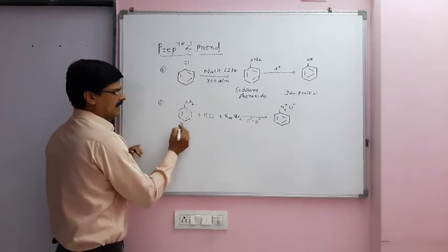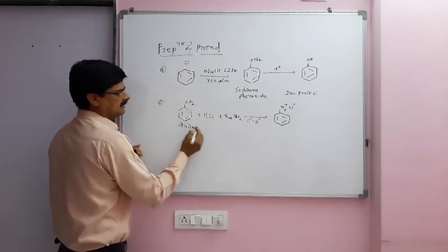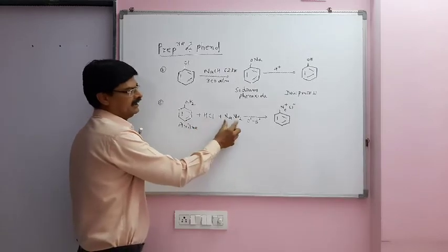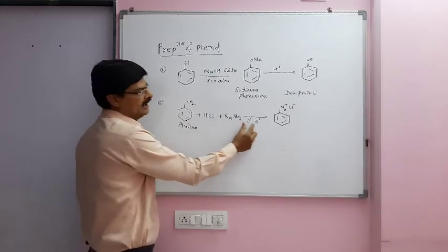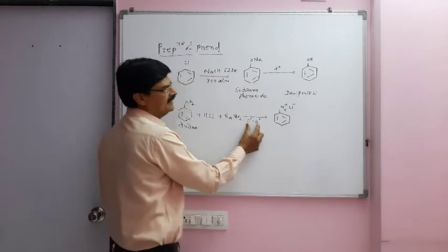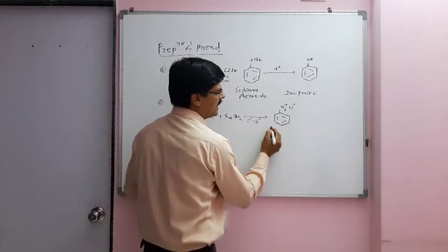So once more: aniline dissolved in acid, reacted with NaNO2 at 0 to 5 degrees Celsius, gives benzene diazonium chloride.